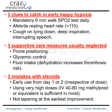Then, three mistakes with steroids. First, early use of steroids from day 1 or 2, irrespective of dose. Avoid early steroids and also avoid very high doses — IV 40 to 80 mg of methylprednisolone or equivalent is sufficient in most cases. Second, not tapering at the earliest after improvement. The take-home point is: start at appropriate time, give the appropriate dose, and taper at the appropriate time when improvement is there.